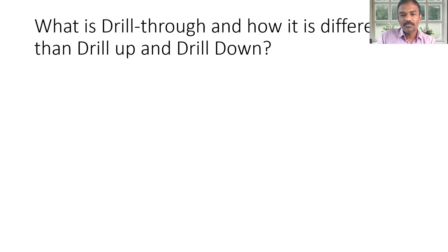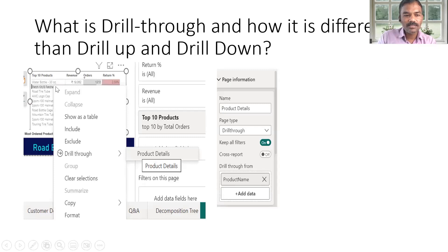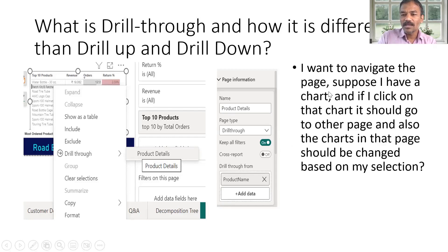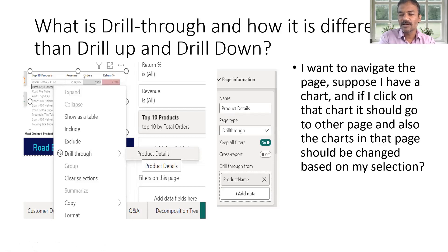How is drill-through different from drill up and drill down? Drill-through means you click on a product, navigate to a product details page, and other page information is shown based on that selection. The page type and drill-through set filter out the particular chart based on the product name, and when you click on a chart it should go to another page with charts updated based on your selection.